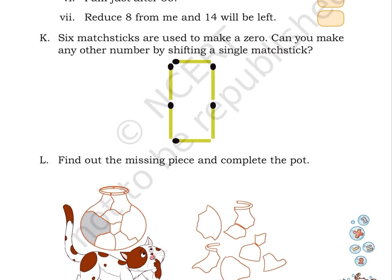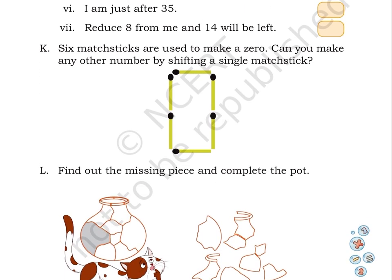Puzzle K: 6 matchsticks are used to make a 0. Can you make any other number by shifting a single matchstick? Here, we can observe a 0 made with the help of 6 matchsticks.